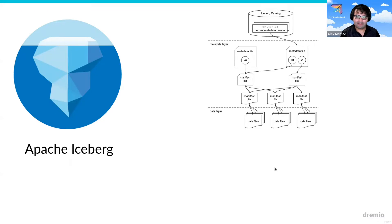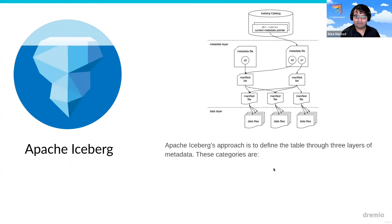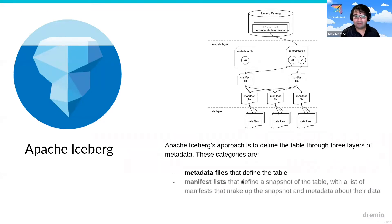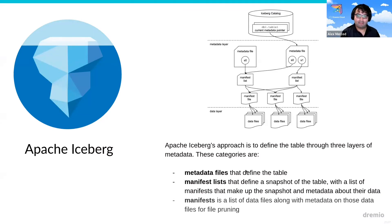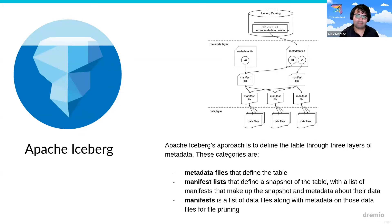So you have the metadata files which define the table, the manifest list which defines the snapshot, and then the manifests which define different groups of files that make up the table. Using these files, a query engine can efficiently use that data to plan the query as efficiently as possible.